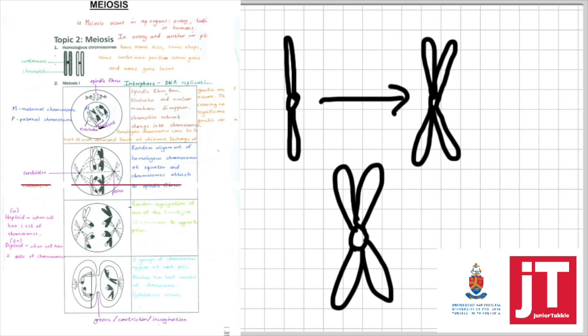Now we're moving on to meiosis. Meiosis is reduction division and is very important. Meiosis occurs in reproductive organs — the ovary and testes in humans, the ovary and anther in plants. In meiosis there are two divisions: meiosis 1 and meiosis 2. We start off with homologous chromosomes. Homologous chromosomes have the same size, shape, centromere position, genes, and gene locus. One is maternal and one is paternal. The round structure in the center is the centromere, and the long strands are the chromatids.